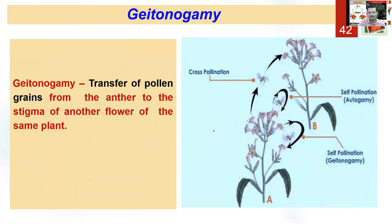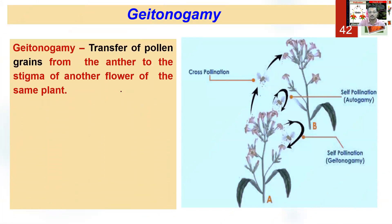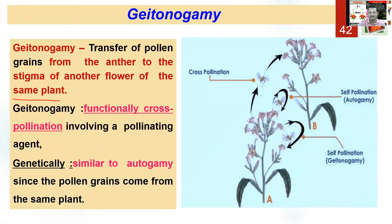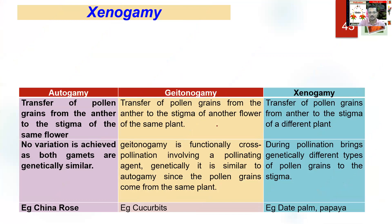Geitonogamy: transfer of pollen grain from anther to the stigma of another flower, but the plant is the same. The important thing to understand here is that it functionally looks like cross-pollination because a pollinating agent is involved, but genetically it is similar to autogamy. Autogamy means just self-pollination, where pollen from the anther of a flower is released onto the stigma of the same flower — so there is not much genetic difference.